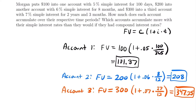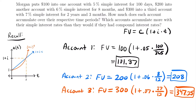Now there's one more part to this question: which accounts accumulate more with their simple interest rates than they would with compound interest? If we graph the accumulation factors for compound and simple interest, compound interest is an exponential function and simple interest is a linear function. Because of that, during the first year — or any time before the first year ends — simple interest generates more interest than compound interest would. After one year, compound interest generates more.